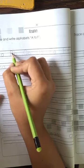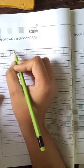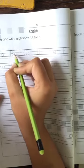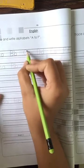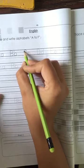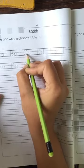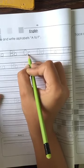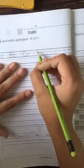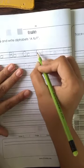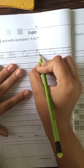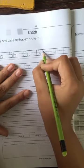And trace the small b. Third letter is C. Now small c. D, the duck, now trace the small d.